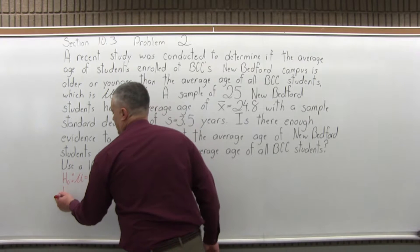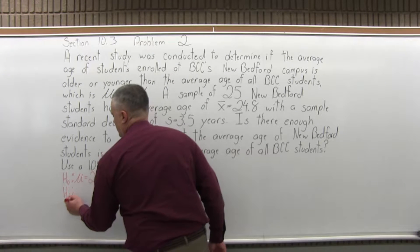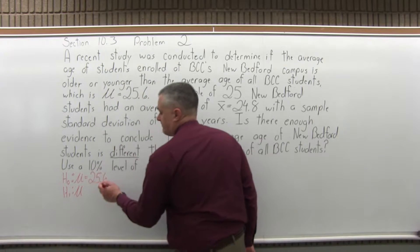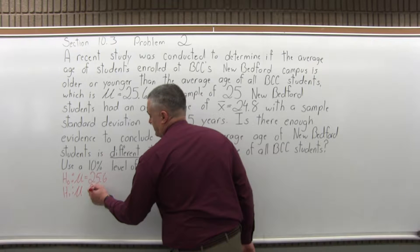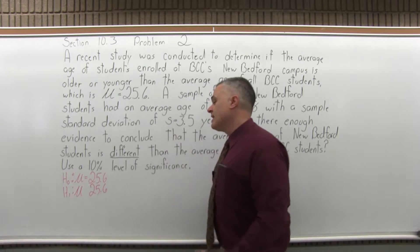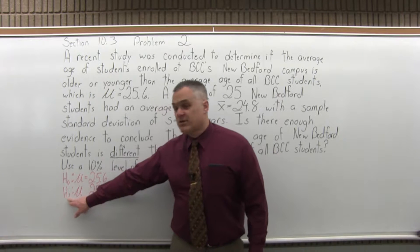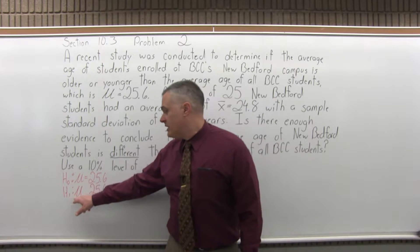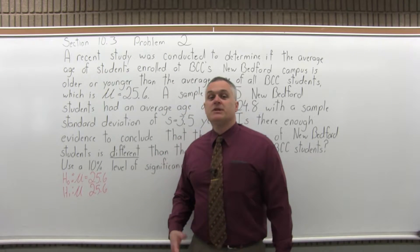The second step is state the alternate hypothesis. So you'll have μ, a little bit of space I'll leave, and the same number again. So the alternate hypothesis, capital H subscript of one, put the colon, same μ, same number, but different symbol.